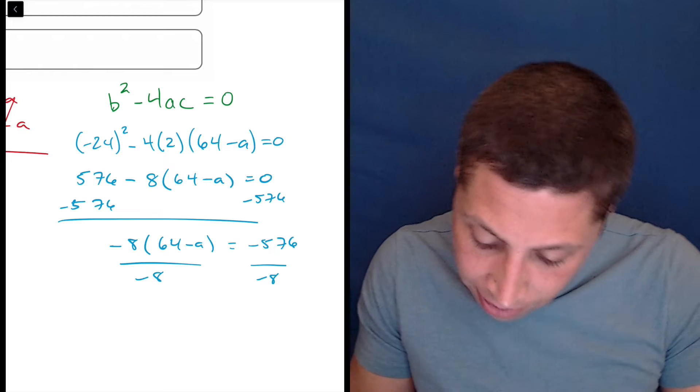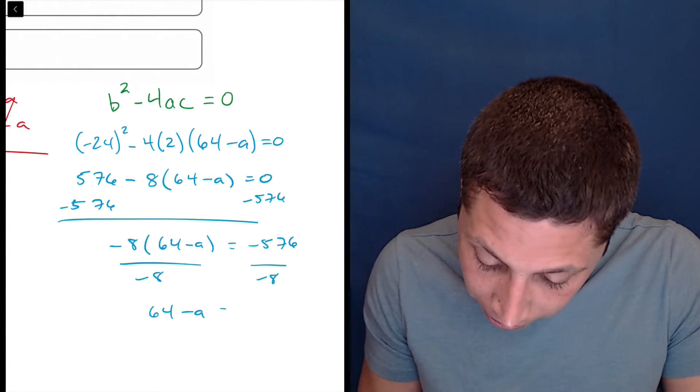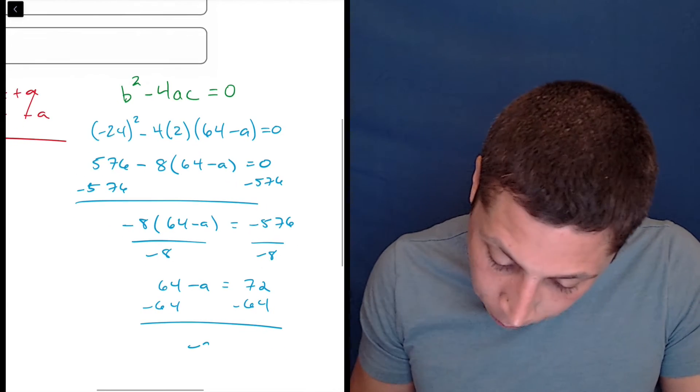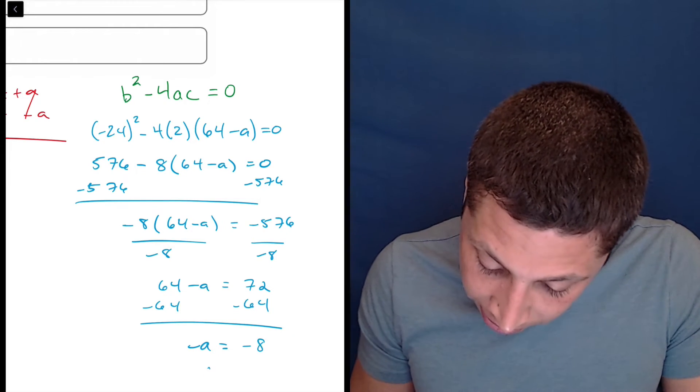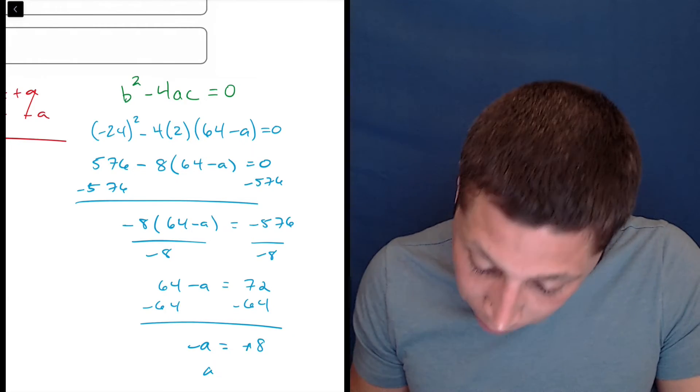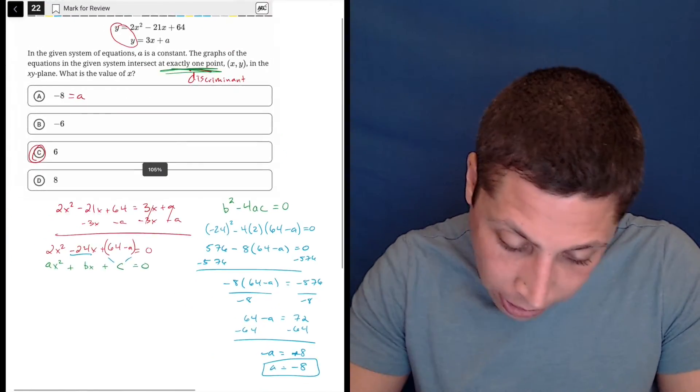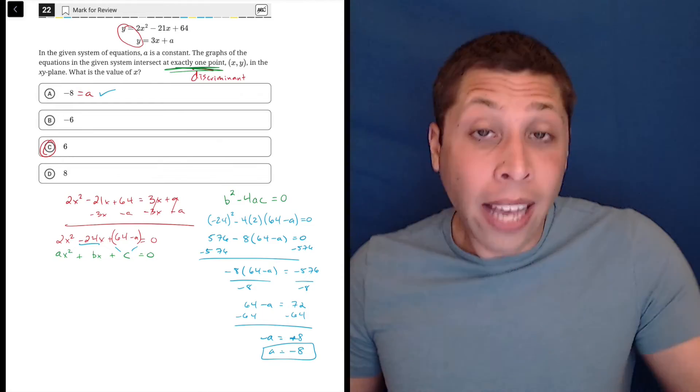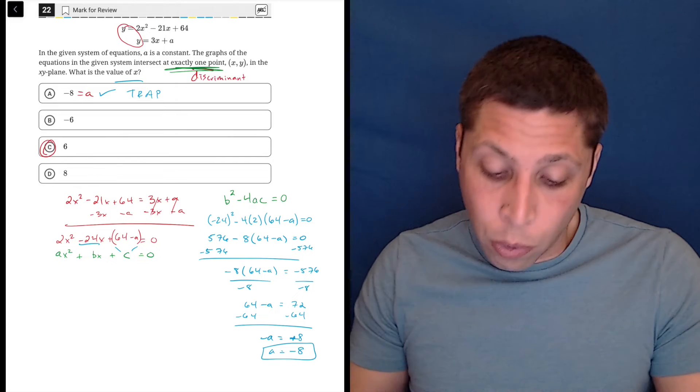We get negative 8 times 64 minus a is equal to negative 576. Let's divide by negative 8. So divided by 8 is 72, so 64 minus a is equal to 72, subtract 64. And we get negative a is equal to negative 8, so a, or sorry, is equal to positive 8, so a is equal to negative 8. And notice that's what we got before, a was negative 8. Well, again, that's still a trap, right, and it's not my answer. They want the value of x where these two things intersect.